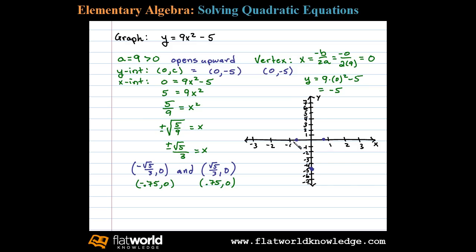So let's determine two more points to get a better feel for this graph. Let's use the x values negative 1 and 1 and find the corresponding y values. Substituting negative 1 into the original we have y equals 9 times negative 1 squared minus 5 or 9 minus 5 which is equal to 4. That tells me negative 1 comma 4 is a point on the graph.